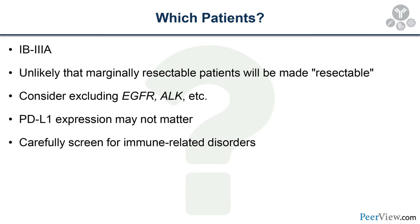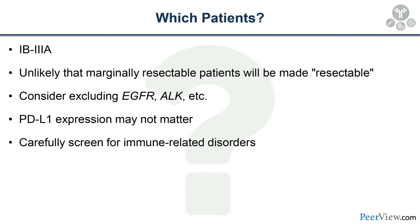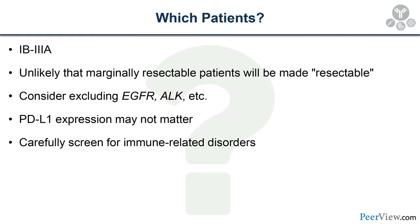Most trials have included patients with stage 1B to 3A cancer. Stage 2 and 3 patients should be given a shot at neoadjuvant immunotherapy. Stage 1B is harder — I don't have a problem with a solid, highly PET-avid, large 1B tumor being enrolled, but I'm more reluctant for stage 1 in general. Another important question is resectability — we don't want to add marginally resectable patients hoping to make them resectable, as these agents don't really make patients more resectable.